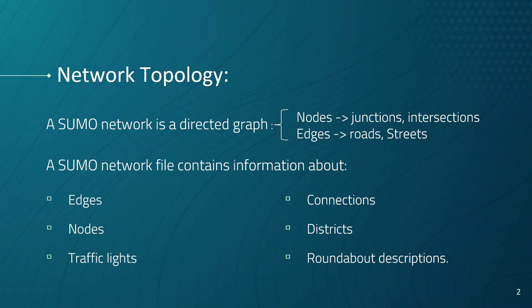A SUMO network file with an XML format describes the traffic-related part of a map — the roads and intersections where simulated vehicles run along or across them. At a coarse scale, a SUMO network is a directed graph. Nodes, usually named junctions in SUMO context, represent the intersections, and edges represent roads or streets.